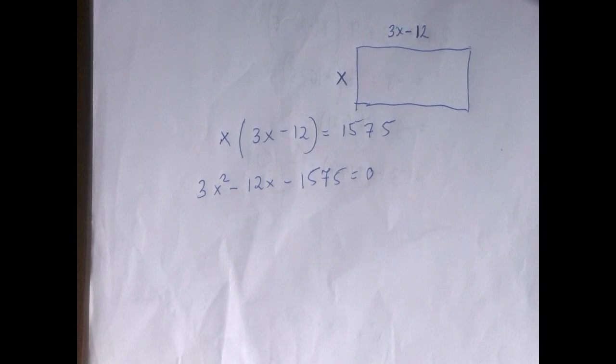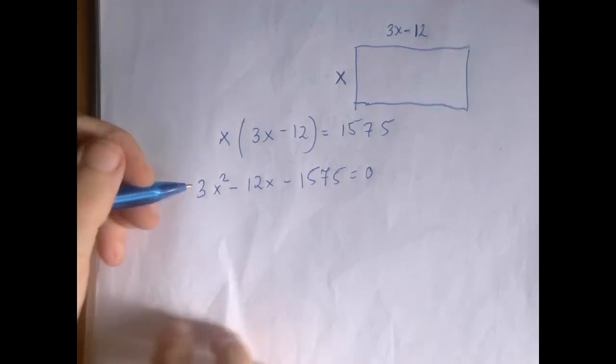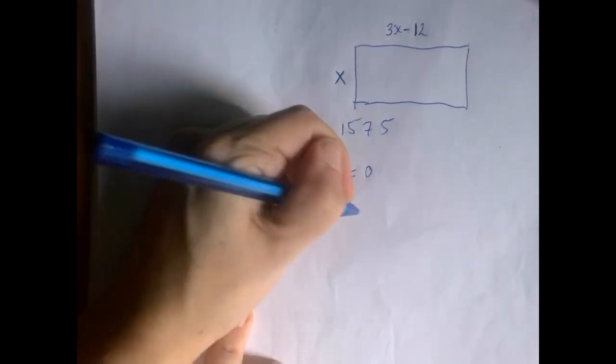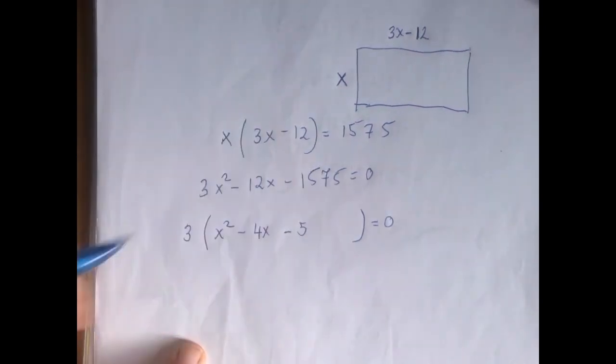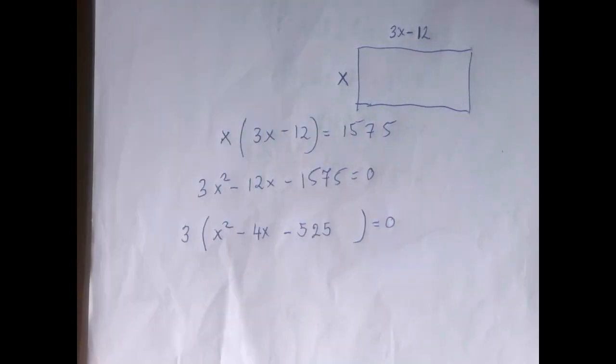We're going to complete the square. Completing the square only works if the leading coefficient is 1, so we're going to get rid of that 3. I'm just going to factor it out. So we have x squared minus 4x minus 525.